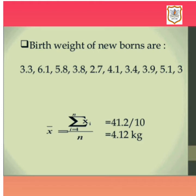Here is an example of ungrouped data: birth weights of newborns are 3.3, 6.1, 5.8, 3.8, 2.7, 4.1, 3.4, 3.9, 5.1, and 3. Using the formula Sigma X upon n, the sum of all observations is 3.3 + 6.1 + 5.8 + 3.8 + 2.7 + 4.1 + 3.4 + 3.9 + 5.1 + 3 = 41.2. There are 10 numbers, so 41.2 divided by 10 gives the mean.